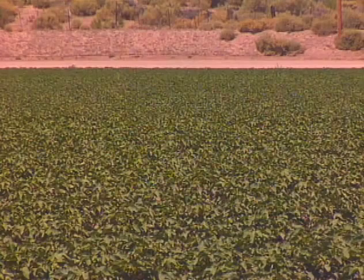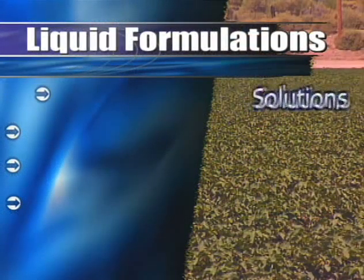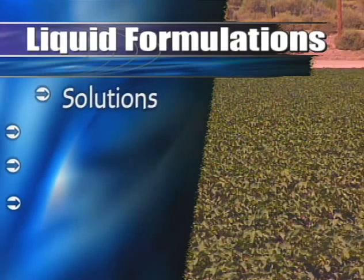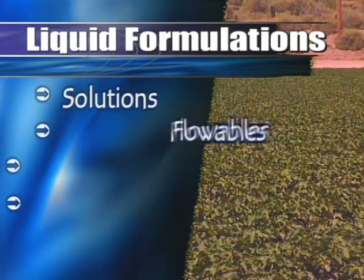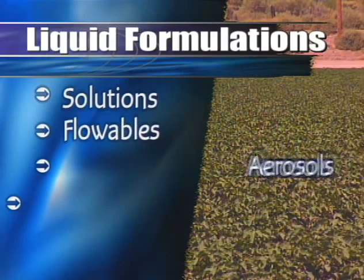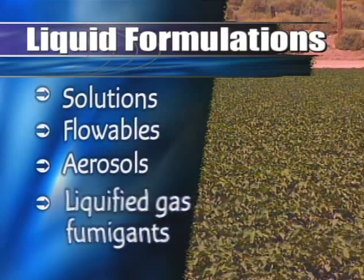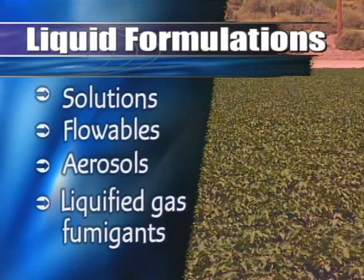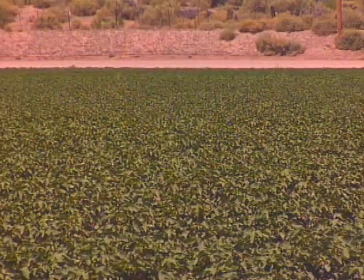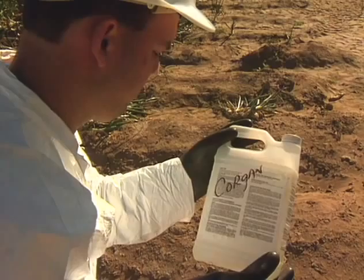Formulations are either liquid or dry. There are four types of liquid formulations. Solutions are one formulation that comes ready for use and requires special application equipment. Flowables must be mixed with water. Aerosols in low concentration are often used indoors as a fine spray or mist. Liquefied gas fumigants turn into gas when applied — some are packed in pressure containers. Before attempting to use any of these pesticides, be sure to read and understand all the instructions on the label.